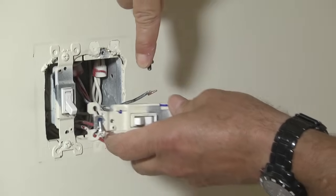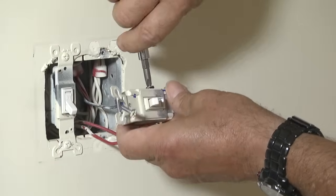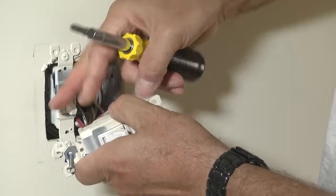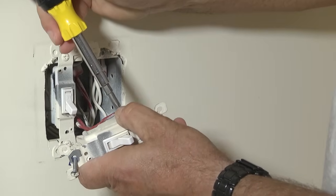Turn the power to the circuit off again and attach the hot wire at switch A to the common screw. Connect the two travelers in any order to the remaining two screws on the three-way switch.